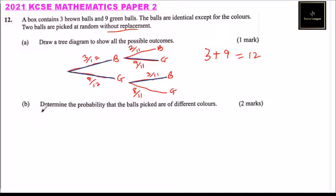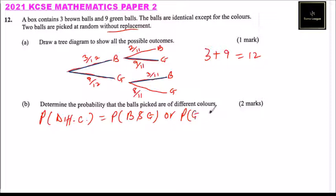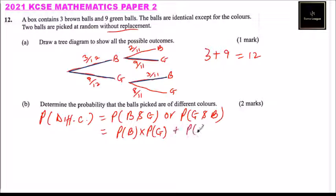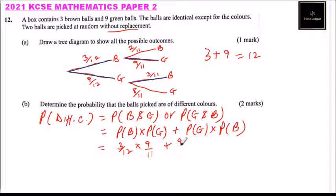So the probability that the balls are of different colors equals the probability of picking a brown ball and then a green ball, plus the probability of picking a green ball and then a brown ball. This equals: probability of picking brown multiplied by probability of picking green, plus probability of picking green multiplied by probability of picking brown. That is 3 over 12 multiplied by 9 over 11, plus 9 over 12 multiplied by 3 over 11.